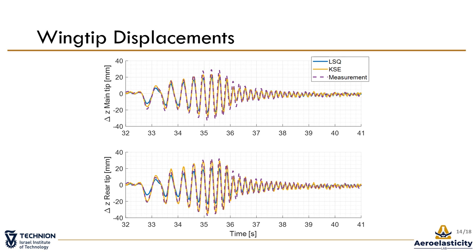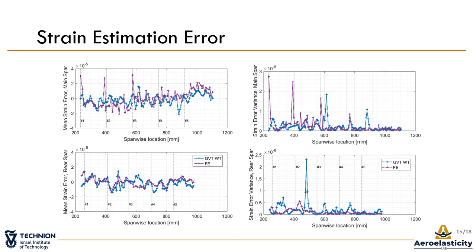What about the ground vibration testing mode set? The figures on this slide compare the Kalman state estimator strain error while using modes from the finite element model versus ground vibration testing at all sensing points. On the left is the mean strain error on the main and rear spars, which is generally within a range of about 15 microstrains — significantly lower than the response itself. On the right is the error covariance. The low variance values indicate that the estimator errors are small throughout the measurement time. For more results of the nominal case, see the full paper.